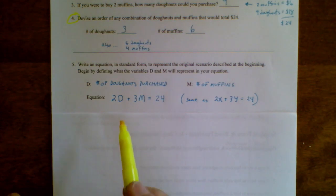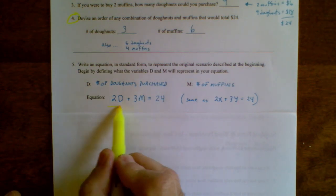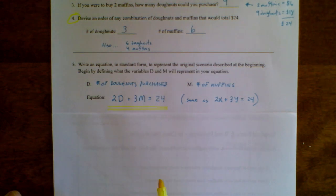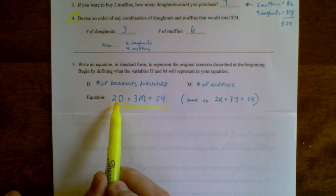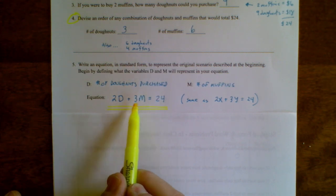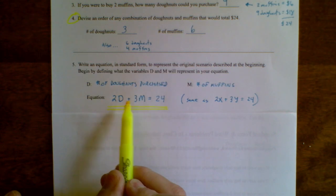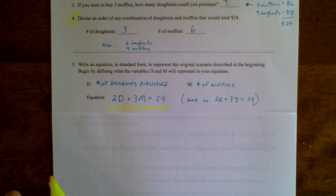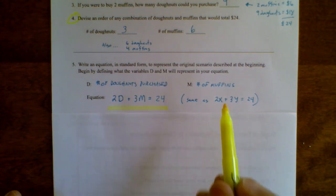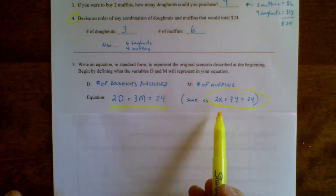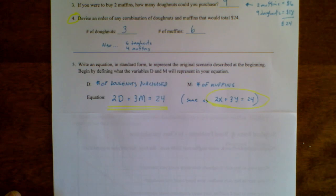Here's the equation. And remember, any time that you are writing something down in math, it should make sense in English. So here's what I would read it as. $2 per donut plus $3 per muffin is equal to the $24 in total. D is the number of donuts, M is the number of muffins. And by the way, if you like x's and y's, your equation would be 2x plus 3y equals 24.